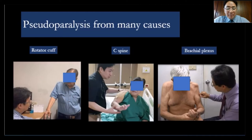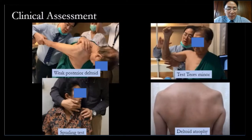These three patient types have the same shoulder weakness, but the cause is different. The first has a cuff tear problem, the second has a cervical spine problem, and the third has a brachial plexus problem. You must not miss this — if you operate on a patient with a nerve problem, you will have complications. You need to do clinical assessment: check the posterior deltoid, teres minor, cervical spine, and brachial plexus.